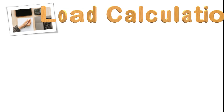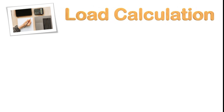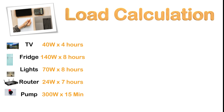The first step is to list the loads that you're going to be running in your home, like your TV, your fridge, lights, internet router, and a well pump. We must calculate each device's power usage and estimate the daily runtime for each. If you have a device that runs less frequently — say once a week — you can divide the power consumption by seven days to get an average. Don't forget to add the inverter's idle consumption depending on the model you purchased.